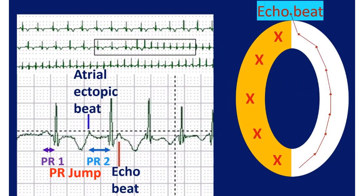When the atrial ectopic beat gets conducted down the slow pathway, there is a sudden increase in PR interval compared to the previous sinus beat. This is known as a PR jump, and it has to be more than 50 ms to be significant. The monitor tracing shown here illustrates the PR jump for the ectopic beat and an echo beat just after the QRS.